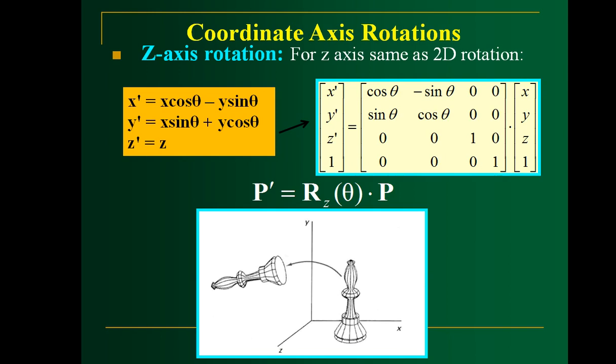Let us see the coordinate axis rotations. The first one is Z-axis rotation, where an object is rotated with respect to the Z axis. Here we have both the equations and the matrix representation for the rotation. If you rotate any object with respect to a given axis, you keep that axis unchanged. For Z-axis rotation, z' = z, while X and Y change with respect to the angle theta.